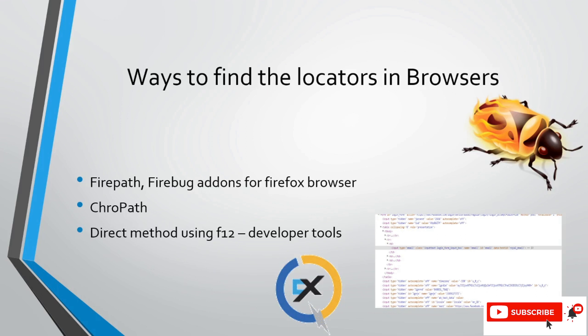How do we find these locators in browsers? We have some add-ons for Firefox and Chrome, but because of security or other issues those may not always be available. I suggest using the direct method — using Developer Tools. You can press F12 to open the Inspector mode, and I will give an in-depth overview of each selector like ID and Name with a detailed demo.